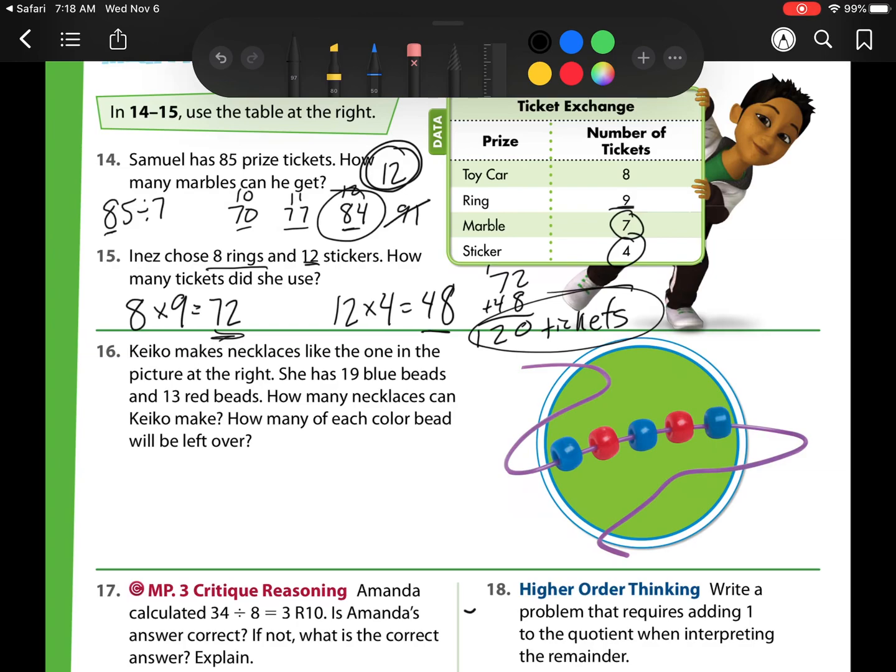Number 16, Kiko makes necklaces like the one on the right. She has 19 blue beads and 13 red beads. How many necklaces can Kiko make? How many of each colored beads will she have left over? Well, let's see. My necklace needs to have 3 blues and 2 reds. So I'm just going to make that note on the side. 3 blues and 2 reds.